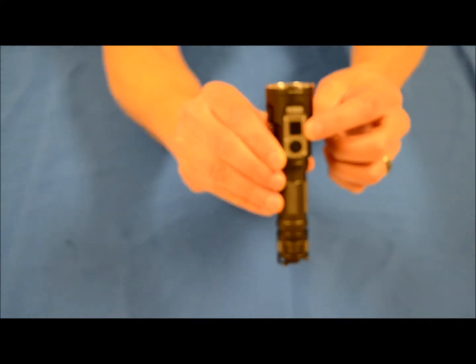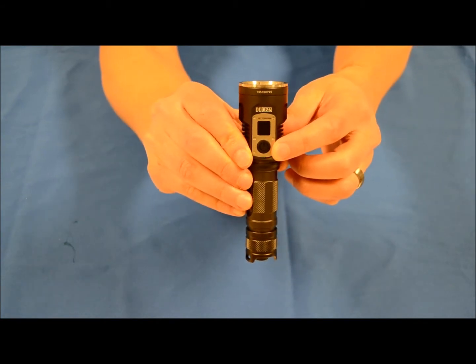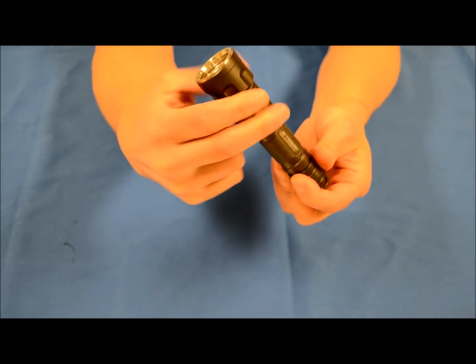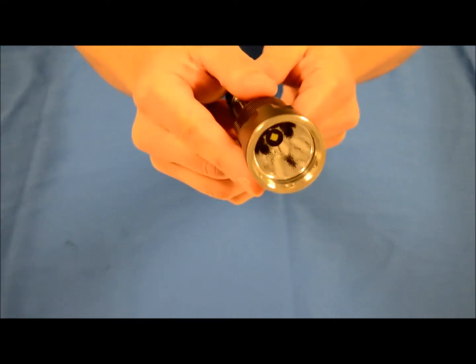You've got your indicator screen to show you what's going on, your one button to turn the light on and to toggle through all the different modes. Nice heat sinks on the side, got a semi-deep orange peel reflector.